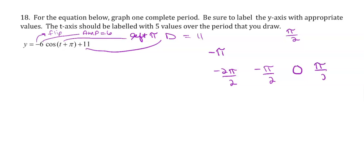We're looking for 5 angles. Add pi over 2 to that, and you get 2 pi over 2.